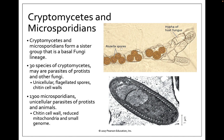The cryptomycetes and the microsporidians are believed to form a sister group, making them the most closely related to each other. They are both basal, located at the top of this phylogenetic tree, as likely the first groups to have branched off in the fungi kingdom. Both of these groups have been added to the fungi kingdom because of the key characteristic that they contain a chitin cell wall. The chitin cell wall is a unique derived characteristic of the kingdom fungi, and the presence of this cell wall is one of the things that has us thinking maybe these belong in the fungi kingdom.